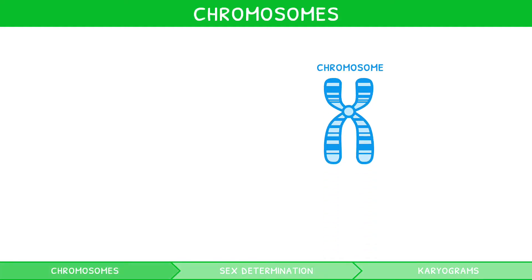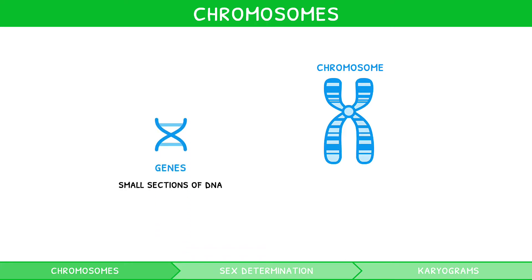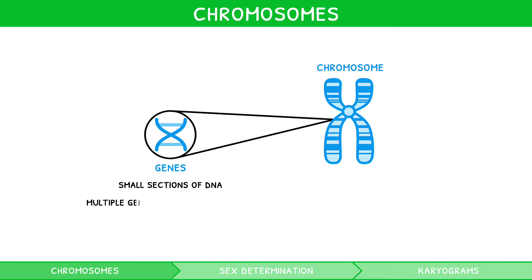It is important to understand that all DNA in eukaryotes is condensed within the nucleus to form structures known as chromosomes. As covered in our previous IB Biology Topic 3 video, genes are small sections of DNA. They are therefore small sections of a chromosome, with multiple genes being found on each chromosome.